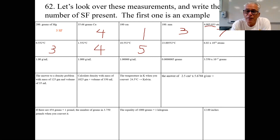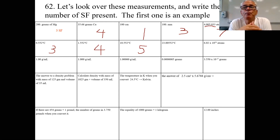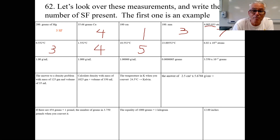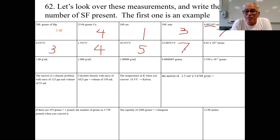Significant figures are important, and yes, they're a pain. You have to know them. There aren't a lot of rules — six or seven, mostly about zeros. Zeros don't get a free pass. Next: 23.00552 — some kind of temperature. All seven of those digits are significant because the zeros are between significant figures.